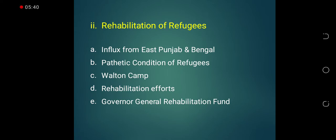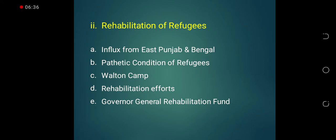Two princely Sikh states in the area — Patiala and Kapurthala — took a very aggressive attitude toward the Muslims. The rulers of these states gave weapons and money to criminals and young Sikhs, who were asked to start attacking the Muslims. Muslim houses were plundered, people were massacred, women were kidnapped, and children were brutally murdered, due to which people from East Punjab started migrating toward Pakistan. Almost 6.5 million Muslims had to migrate to Pakistan, 1.5 million were massacred, and almost 2.5 million were left behind.